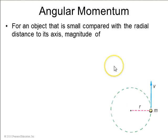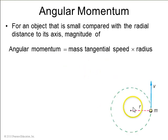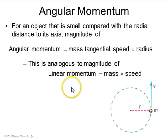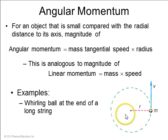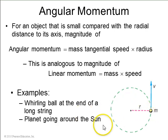So for an object that is small compared to the radial distance to its axis, a little point particle going in a circle, the angular momentum is mass times the tangential speed times the radius. So a whirling ball at the end of a long string will have mvr, or a planet going around the sun. That's how you compute its angular momentum.